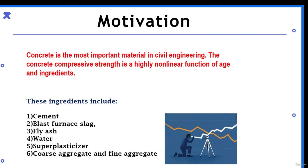This is basically a core project — it may seem off-topic, but in the field of civil engineering, machine learning is very applicable. The main motivation is that concrete is the most important material in civil engineering, and its compressive strength is a highly non-linear function of its ingredients, which include cement, blast furnace slag, fly ash, water, super plasticizer, coarse aggregate, and fine aggregate.